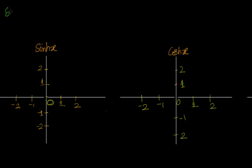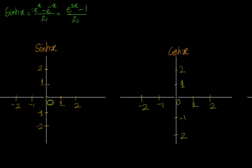We know that sinh(x) equals e^x minus e^(-x) divided by 2. If you multiply numerator and denominator by e^x you will have e^(2x) minus 1, divided by 2e^x. Similarly, cosh(x) is e^x plus e^(-x) divided by 2. If you multiply by e^x it becomes e^(2x) plus 1, divided by 2e^x.